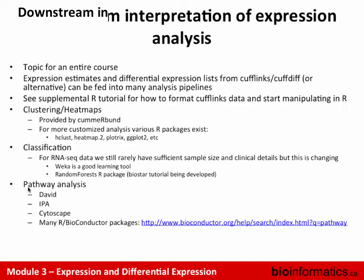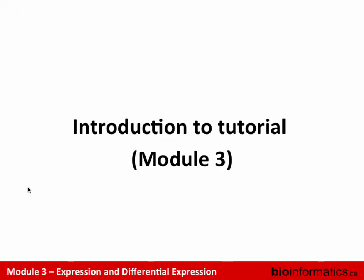Pathway analysis is something people always ask for — as soon as you have expression and differential expression data, they want to know what pathways are significant. DAVID is a really easy web tool where you can paste a list of gene IDs. Ingenuity Pathway Analysis is good but is commercial software. Cytoscape is good for visualizing and has pathway plug-ins. There are also a large number of R Bioconductor packages — searching finds around 250 packages — so checking Biostar for recommendations is advisable.